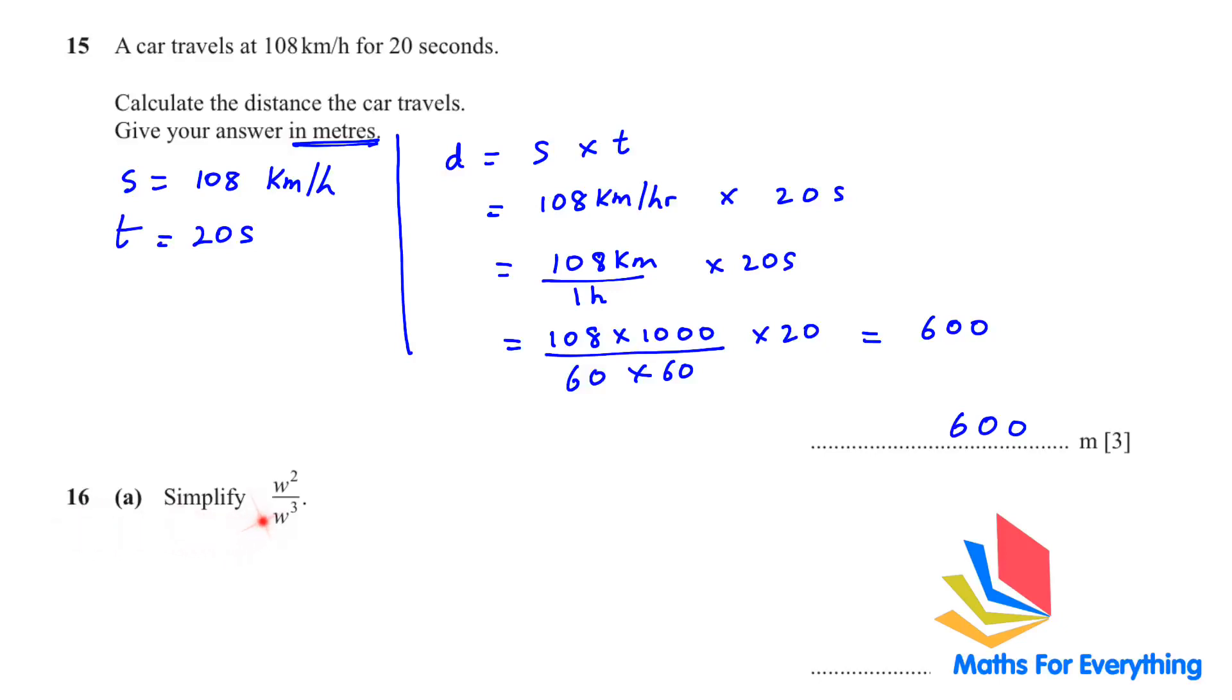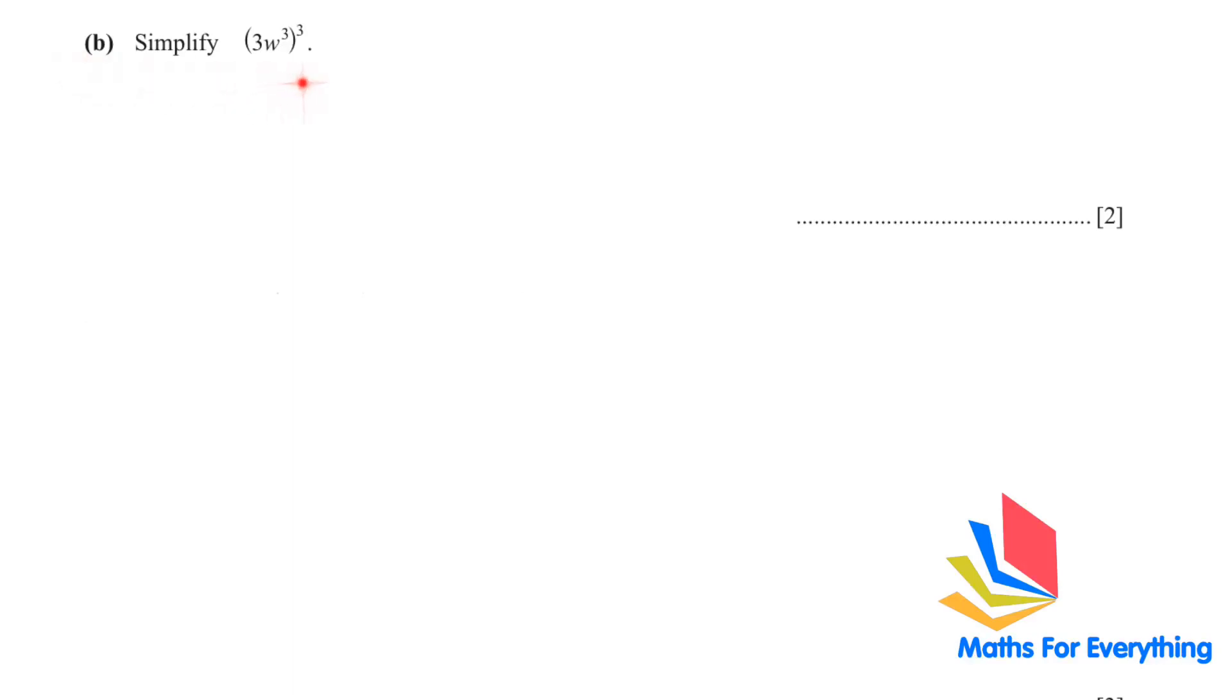So 16a simplify w to the power of 2 over w to the power of 3. This is division. And whenever you are having division in indices or exponents, if the variable is the same, you have a w and a w. So we subtract the powers. 2 minus 3. This will give us w to the power of negative 1. You can leave it like this or write it as 1 over w. Part b, simplify. Remember that whenever you have a power outside and you have terms inside, that power is applicable to each term inside. So you will write 3 to the power of 3 and w3 to the power of 3. 3 to the power of 3 is 27. And when you have in a bracket like this, we multiply the powers. 3 multiply by 3 is 9. So your answer is 27 w to the power of 9.